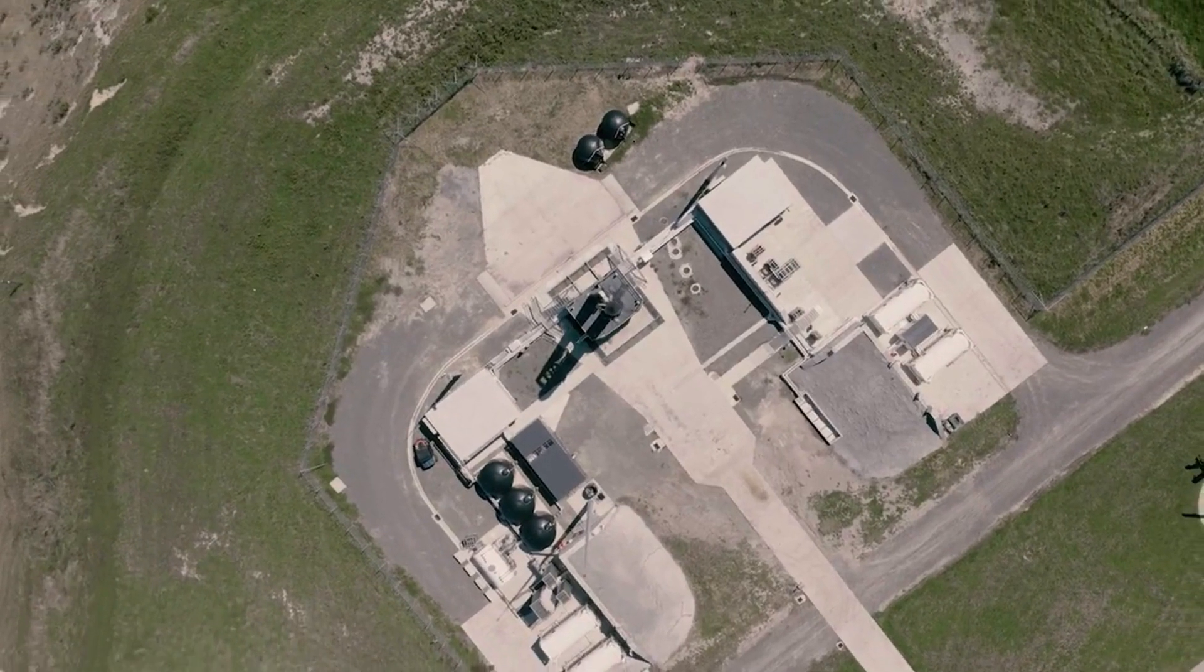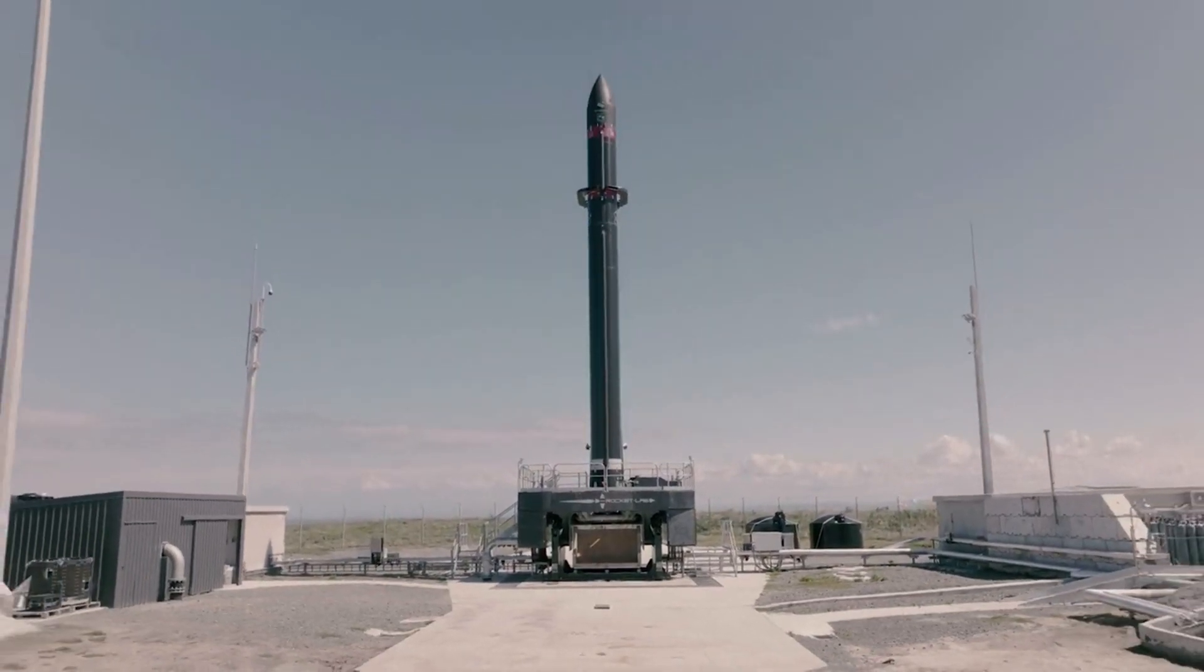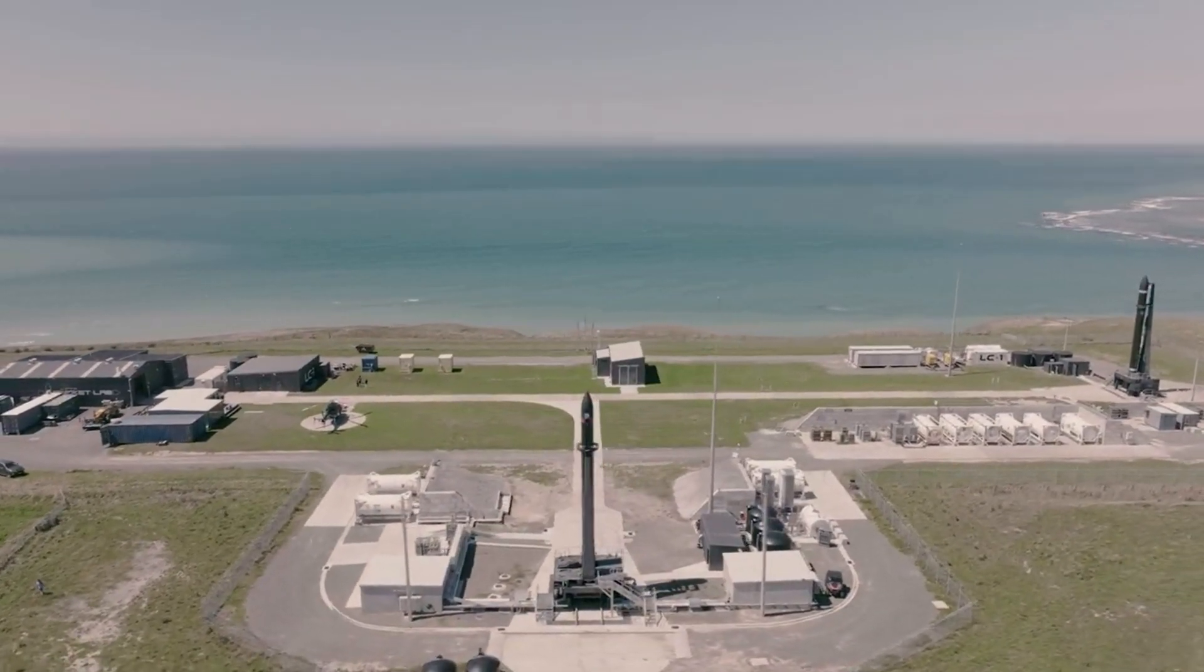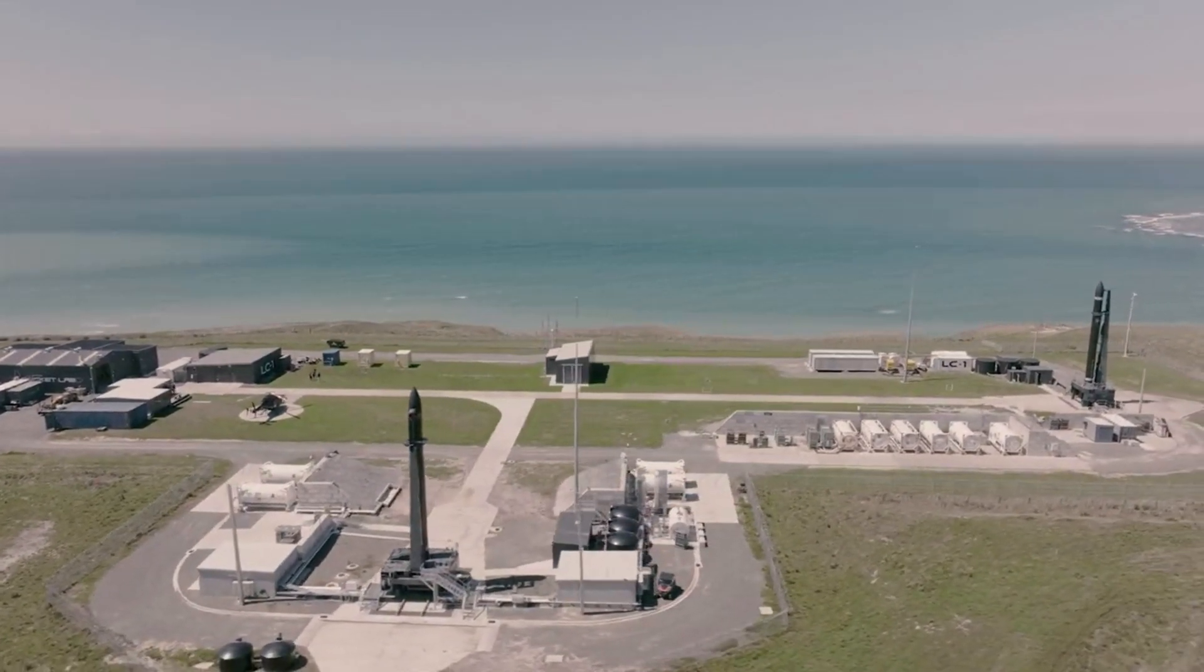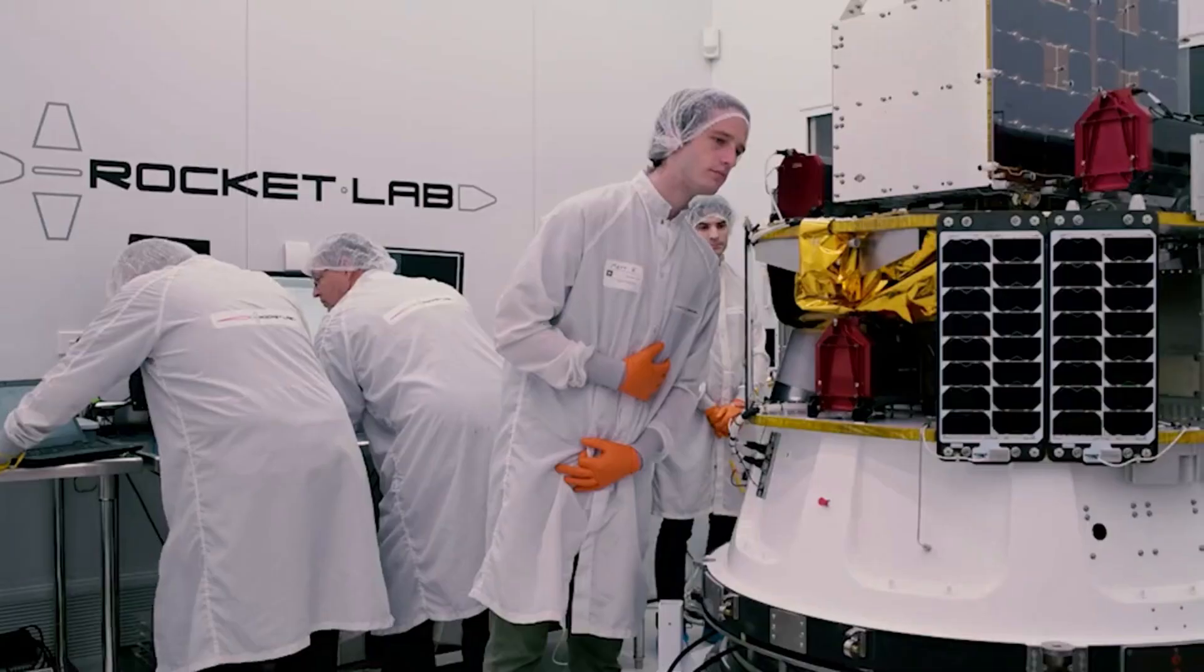The next rocket this agreement mentions is Electron. As of right now, this is an expendable, small lift launch vehicle with a payload capacity to low Earth orbit of around 300 kilograms. In terms of point-to-point transportation, this rocket seems much more ambitious and unlikely.